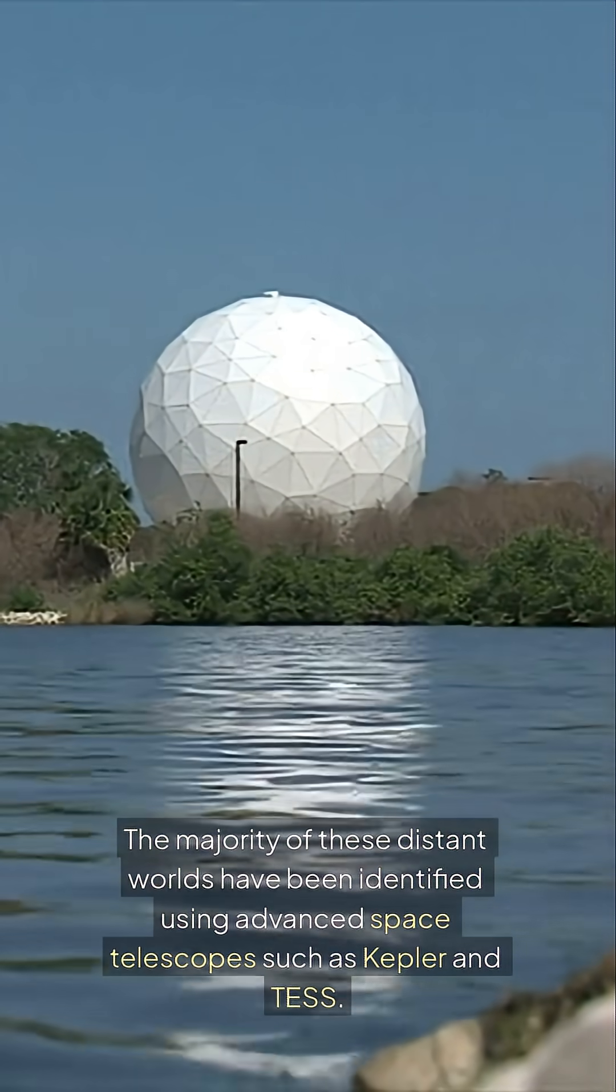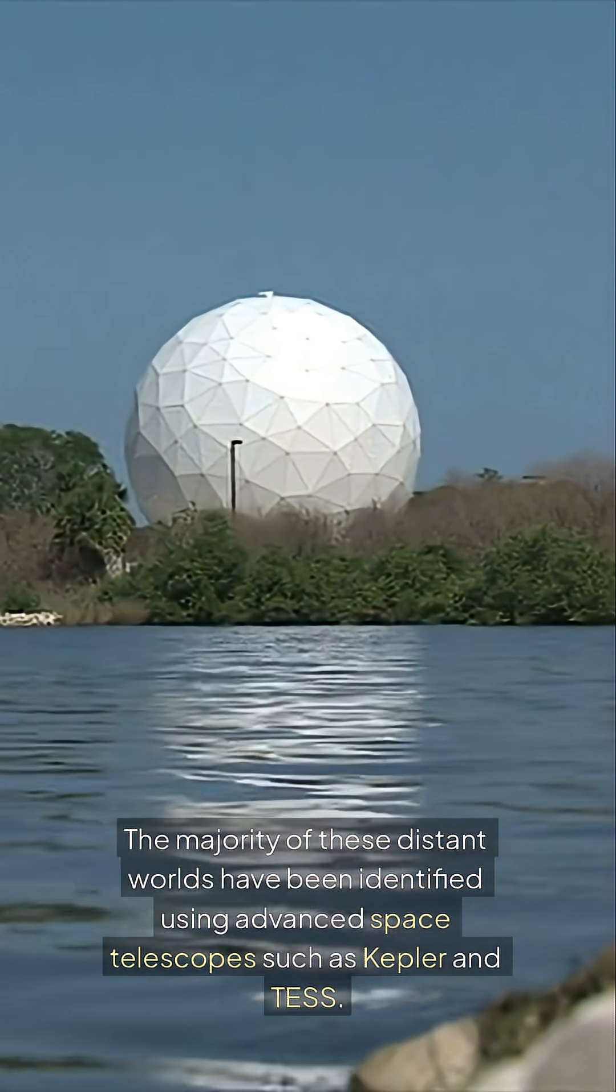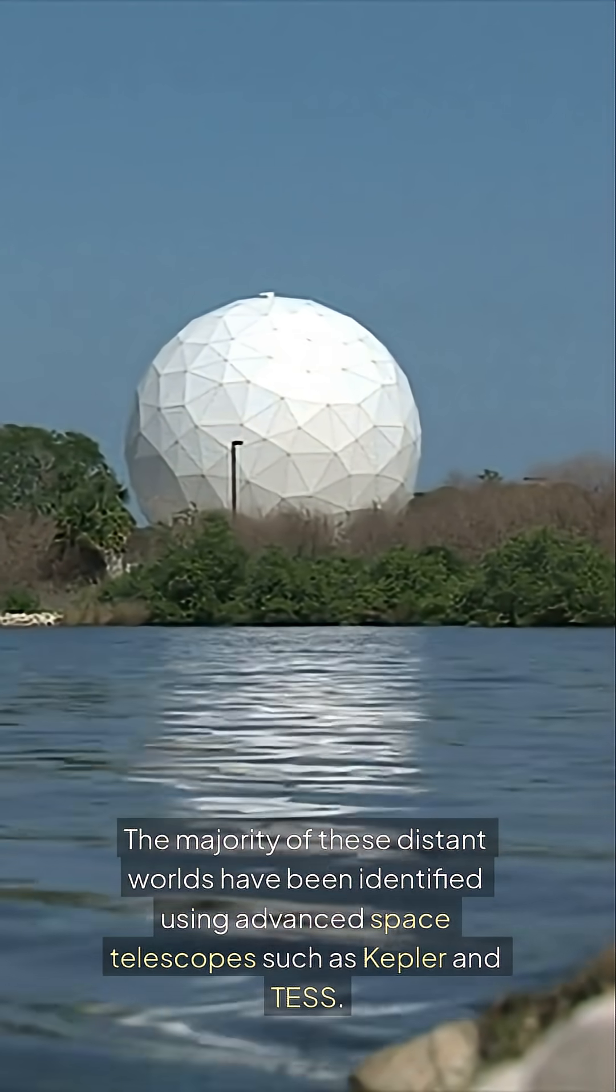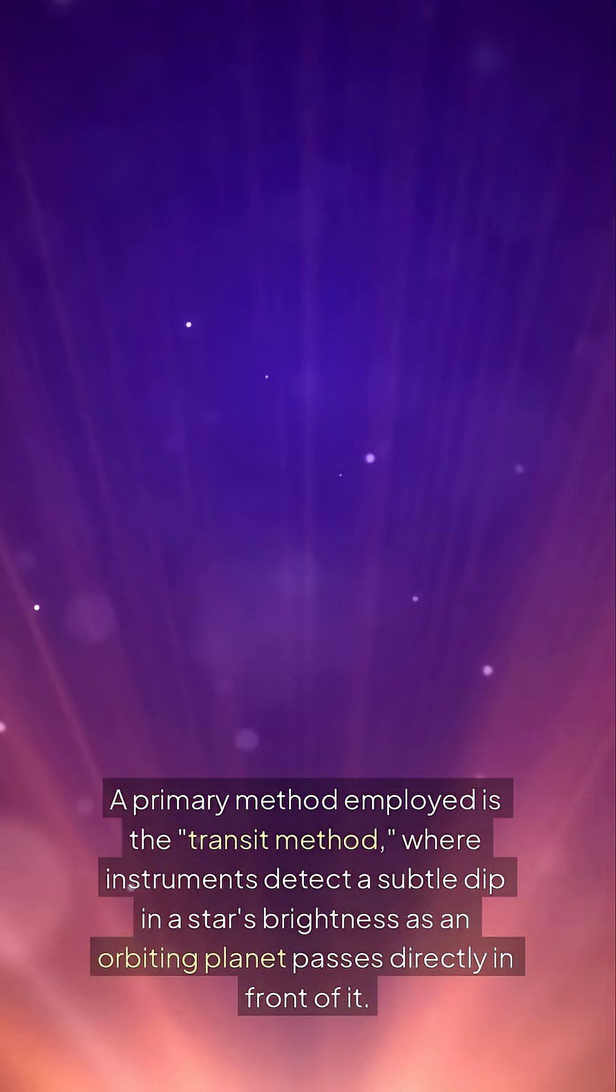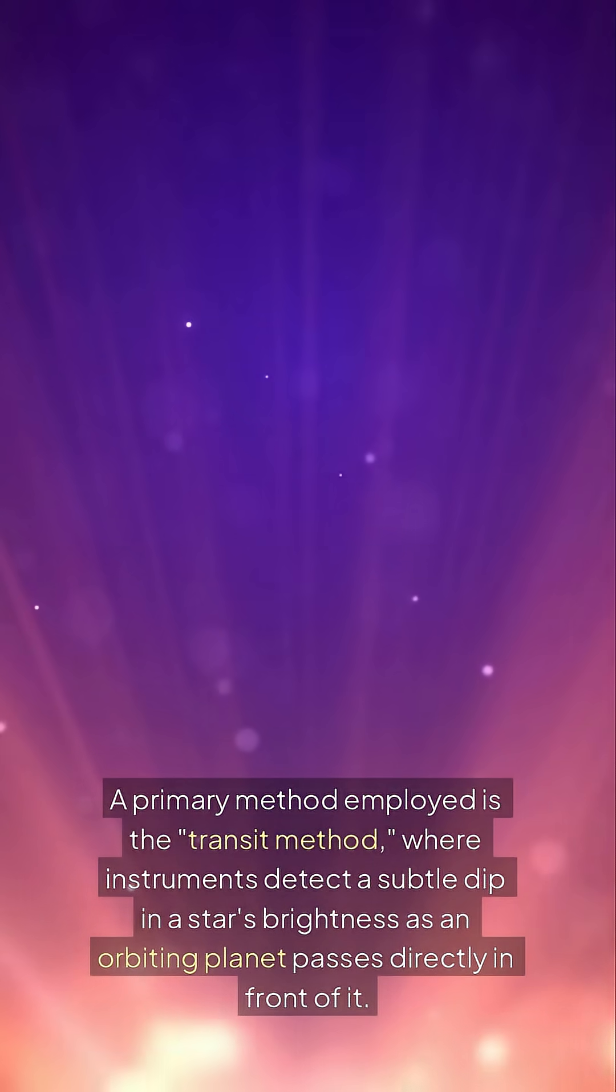The majority of these distant worlds have been identified using advanced space telescopes such as Kepler and TESS. A primary method employed is the transit method, where instruments detect a subtle dip in a star's brightness as an orbiting planet passes directly in front of it.